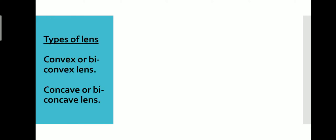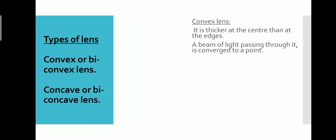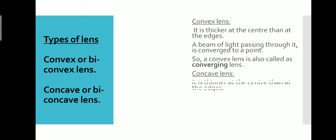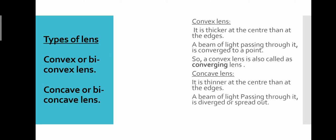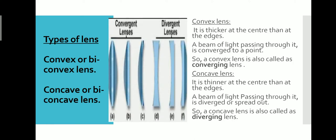So next, the types of lens. There is the convex lens or biconvex lens, and the concave or biconcave lens. In a convex lens, it will be thicker at the center than at the edges. When a light beam enters this type of lens, it converges at a point, so we can call this lens a converging lens. A concave lens is thinner at the center and thicker at the edges, and when a light beam enters through this lens, it diverges or spreads out, so we call this lens a diverging lens.